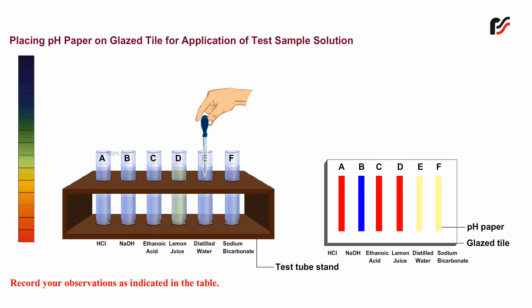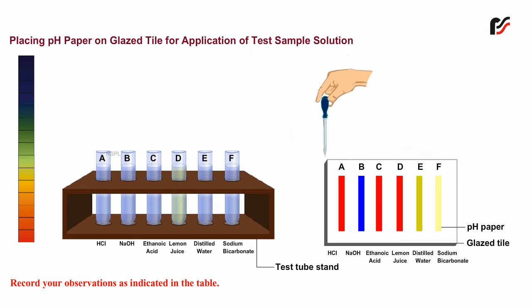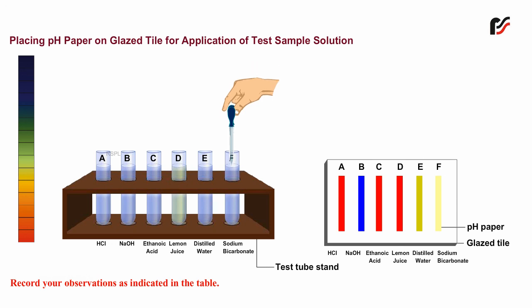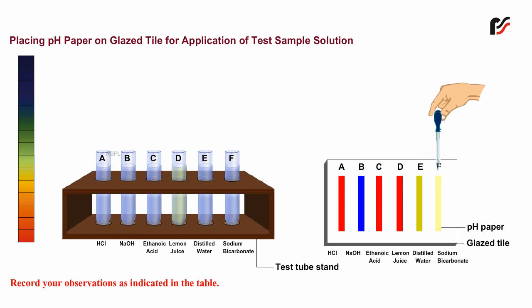On adding the next sample, the pH paper turns red, giving a pH equal to 7.0 — the solution is neutral in nature. On adding the final sample, the pH paper turns red, giving a pH equal to 9.0 — the solution is basic in nature.